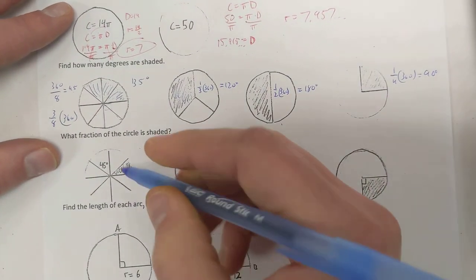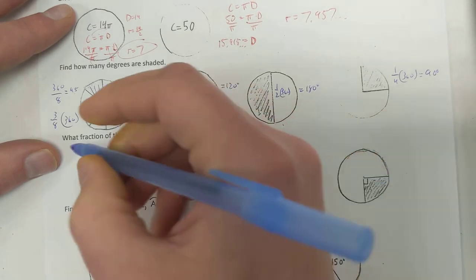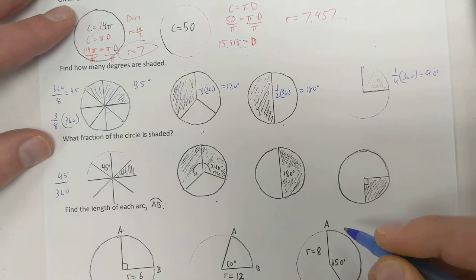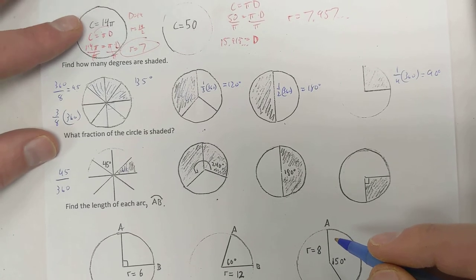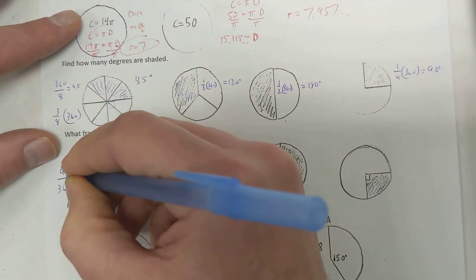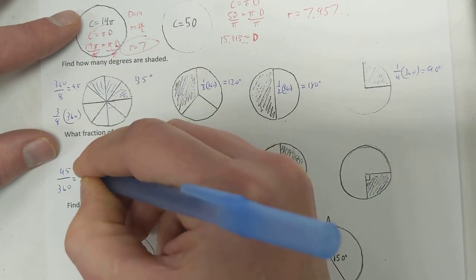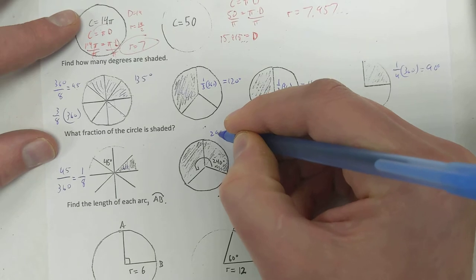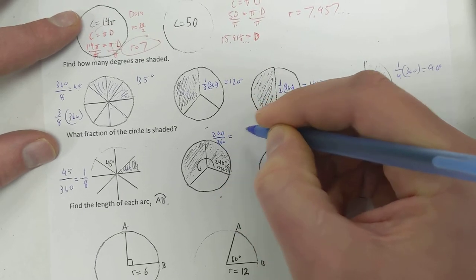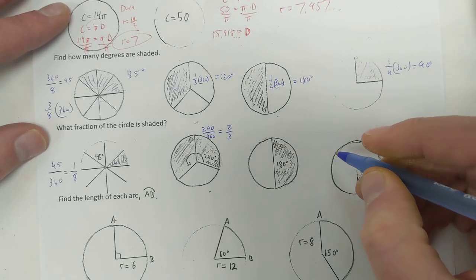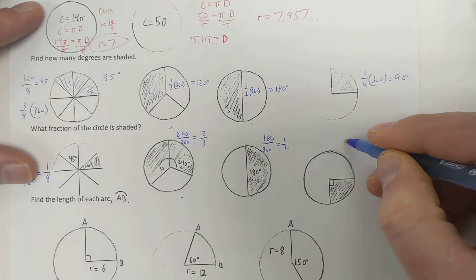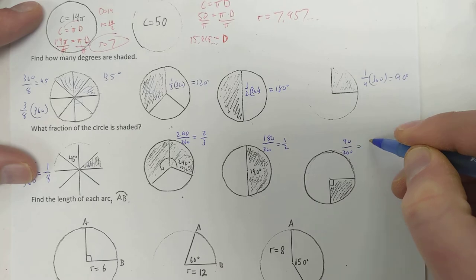Down here, what fraction of the circle is shaded? Okay. Well, that's 45 degrees. That's 45 out of 360. Now, if you're one of those people that's like, my middle school teacher told me I have to reduce. First, your middle school teacher lied to you. You don't always have to reduce, but it's helpful. I actually don't like to reduce that, but if you really want to, we can reduce and call it 1 eighth. This one, it's 240 degrees out of 360, which does reduce to 2 thirds. This is 180 out of 360, which is 1 half. And 90 out of 360, which is 1 fourth.